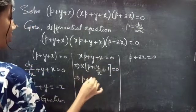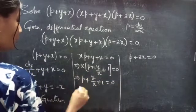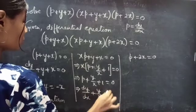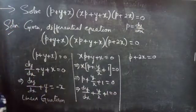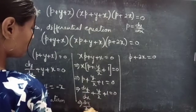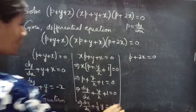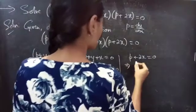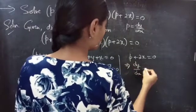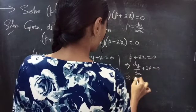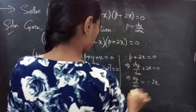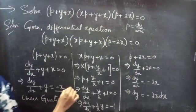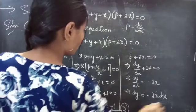Then P + y/x + 1 = 0. Now put P = dy/dx: dy/dx + y/x + 1 = 0. Taking the 1 to the RHS gives dy/dx + (1/x)y = -1, which is also a linear equation. For the last factor, put P = dy/dx: dy/dx + 2x = 0, rewritten as dy/dx = -2x, so dy = -2x dx.